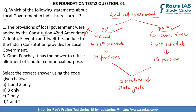The 2nd statement says the 10th, 11th, and 12th Schedules to the Indian Constitution provide for local government — this is also wrong. Only the 11th and 12th Schedules provide for the same; the 10th Schedule is in respect to anti-defection laws. The 3rd statement — Gram Panchayat has the power to refuse allotment of land for commercial purposes — is correct, because one of the functions under the 11th Schedule is in relation to land. Hence, the correct answer is B, 3 only.